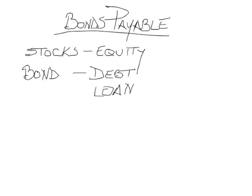There are a lot of four-letter words that go with bond, such as debt and loan, but also note. When you see a note payable, that's debt as well. Your student loans are essentially like a bond — you have to make interest payments on the money that you borrowed, and then at the end you have to give the money back. A bond is very similar to your student loans.